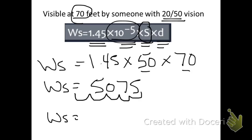So the stroke width then is 0.05075, and here's the trick, feet. We need to transfer that to inches. How do you do that? You multiply it times 12.